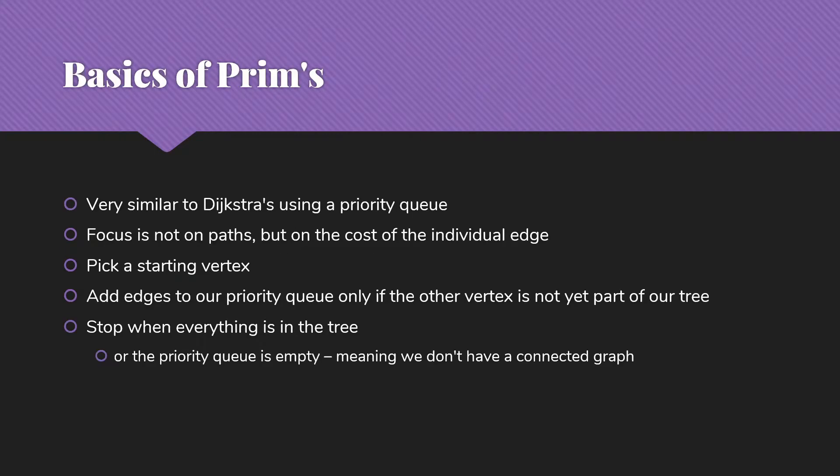Prim's is really very similar to Dijkstra's algorithm when we implement it with a priority queue. The difference is that our focus is not on paths, but on the cost of each individual edge. So instead of ordering our priority queue by the total cost back to some starting point, we're simply going to order the priority queue by the cost of this edge. Otherwise, things are going to be very similar.